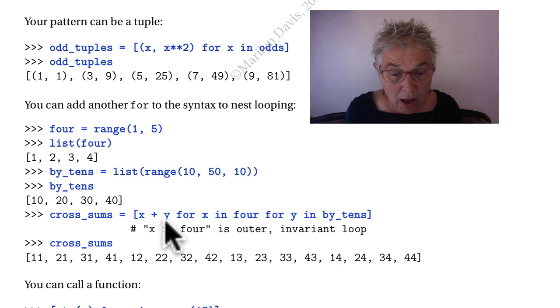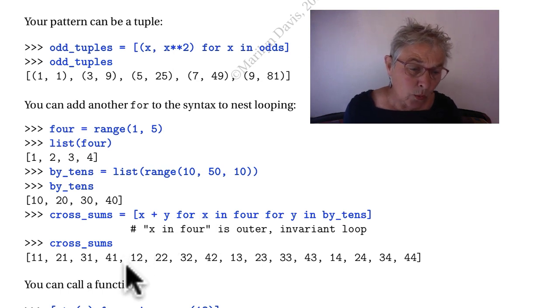I'm looking for each X in four and each Y in tens. What it does is it holds on to the first X and then it spins through all the Y's as if this is the inner loop. X is called the invariant loop because it doesn't vary as much as the inner loop. So that gave us these cross sums where the one held still while we spun through these four. There they are.